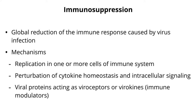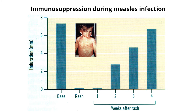Viruses can also cause immunosuppression — a global reduction of the immune response associated with virus infection. It can happen because the virus replicates in an immune cell and destroys it, or messes up cytokine production and signaling. Viruses make proteins that antagonize the immune response — virokines and viroceptors. This can cause immunosuppression, meaning you're susceptible to other infections — viral, bacterial, fungal. Let's look at an example in a child with measles, one of the viruses well known to cause immunosuppression.